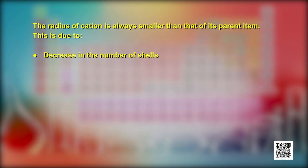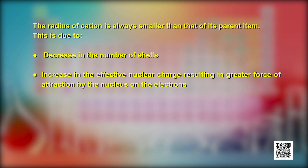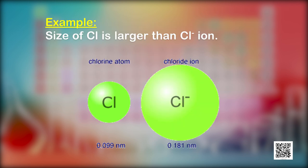Formation of a cation involves loss of electrons. The nuclear charge remains the same as the parent atom, but the number of electrons decreases. As a result, the remaining electrons experience a greater force of attraction, causing a decrease in size. On the other hand, formation of an anion involves gain of electrons. An increase in electrons results in a decrease of effective nuclear charge per electron, thus resulting in an increase in size.